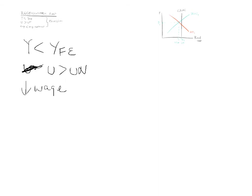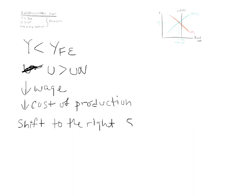Your boss says if you don't work for less, he will let you go and hire someone else. So you accept lower wages. This means that the cost of production falls. A fall in the cost of production means you can now supply more as a seller at the same price level. This will cause a shift to the right of your short-run aggregate supply curve.